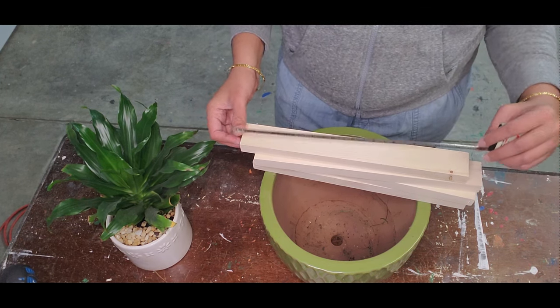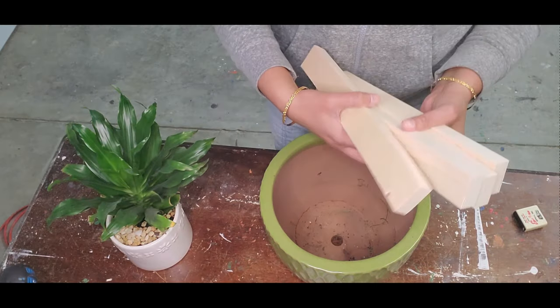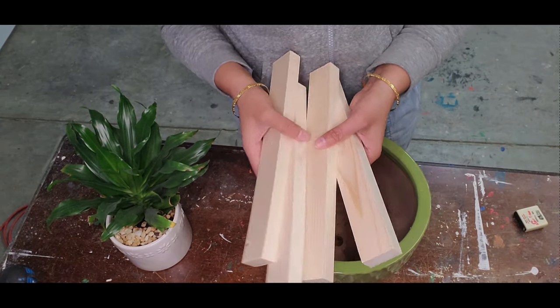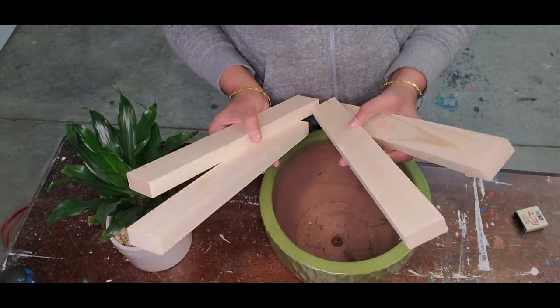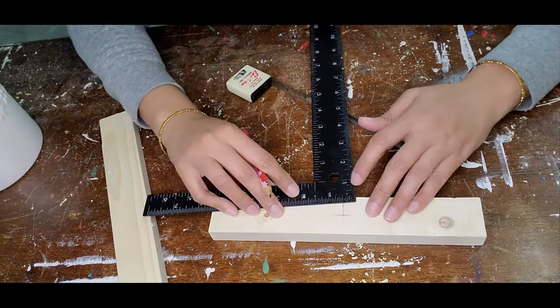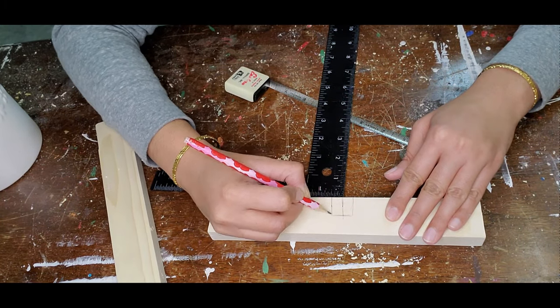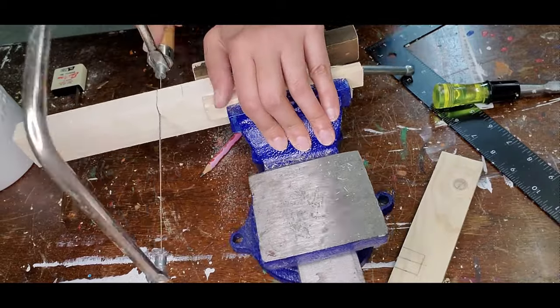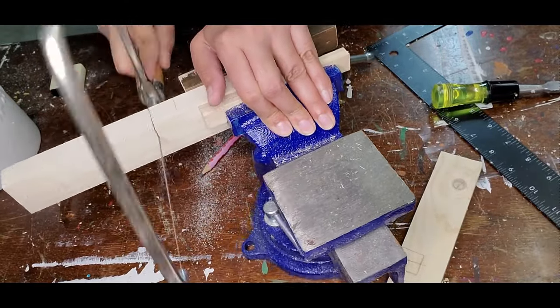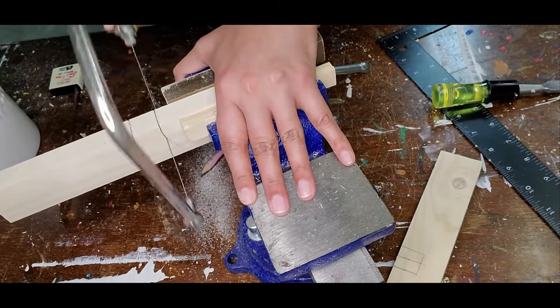The two wooden pieces that measures the diameter will act as a base for the planter and the four 12 inch wooden pieces will be its leg. I have marked the centers for the two pieces that go along the diameter of the planter and cut a half slit for the thickness of the wooden board. Once the slit has been cut, I have locked them in such a way that they are perpendicular to each other.